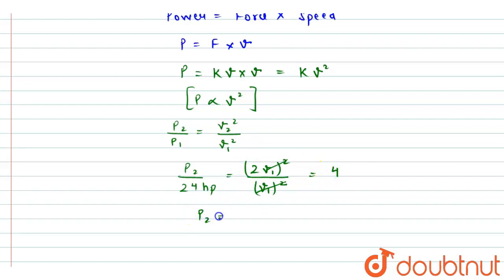So p2 will be given as 24 hp multiplied by 4. The power required would be 96 hp on doubling the speed of the boat.